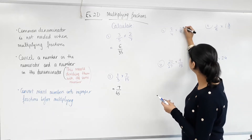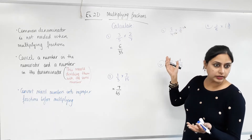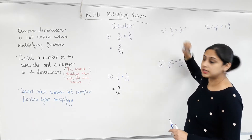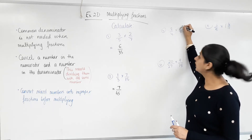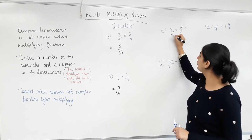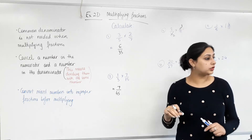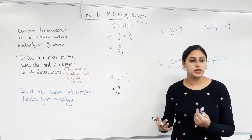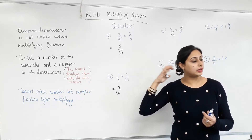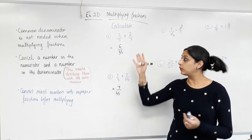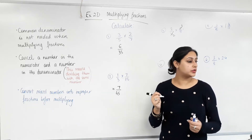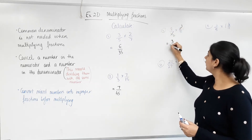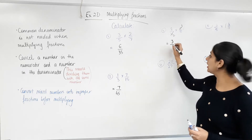Two and four can both be divided by two. So two divided by two is one, four divided by two is two. Are there any other common factors — any more cancelling? Anything on top that can be divided by something at the bottom? No more. So what do we get? Three times one is three, two times five is ten. The answer is three tenths.